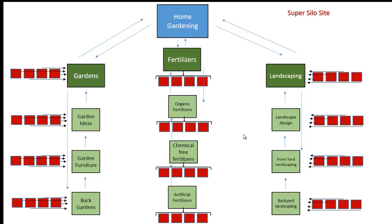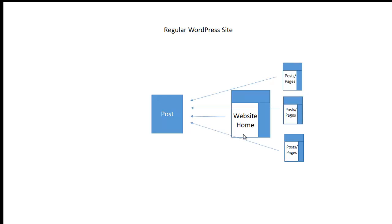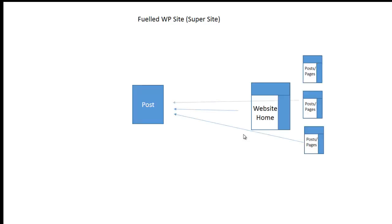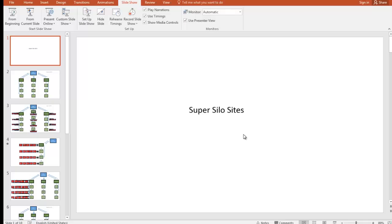So this is how you take a regular silo site and turn it into a super silo site. Now I'm going to show you how this same principle works with a non-silo structured site. With a non-silo structured site, you make a post and your regular WordPress website links back to that post in its regular structure. As soon as your posts start to get older, they start to lose links. But with the WP SERP fuel method, or the SERP fuel technique, it turns your site into a super site. You make the post as usual, your WordPress site links to that post as usual, but at the same time you're creating these fueled posts revolving around topics of that main post using diverse anchor text, all linking back to that main post.